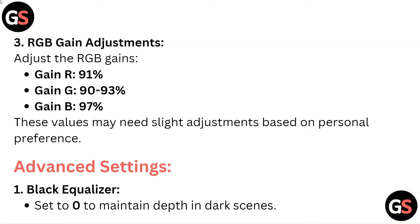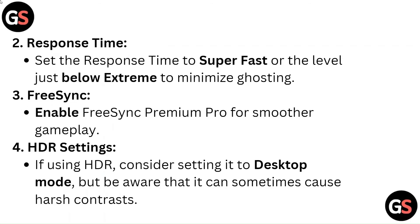Advanced Settings: Set the Black Equalizer to 0 to maintain depth in dark scenes. Set the response time to super fast, or the level just below extreme, to minimize ghosting. Enable FreeSync Premium Pro for smoother gameplay.